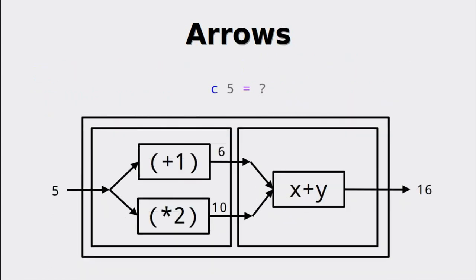Here we have an example, be it artificial, showing how the data flows through our arrow. This is really the essence of arrows — it is directed data flow through a sort of pipe, quite similar to Unix pipes, but with even more functionality.